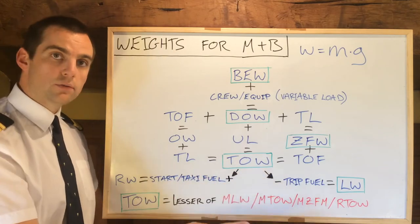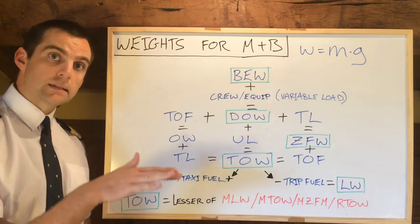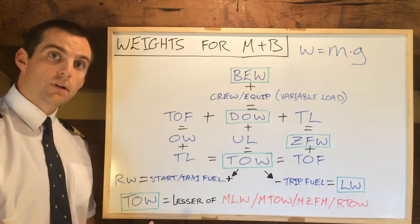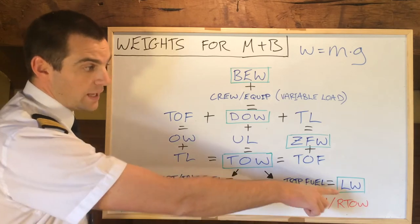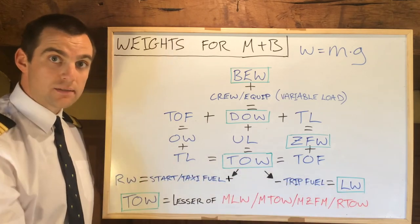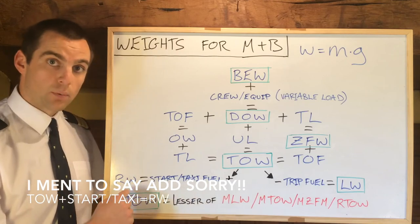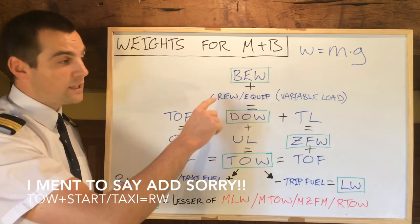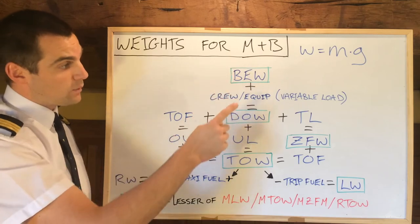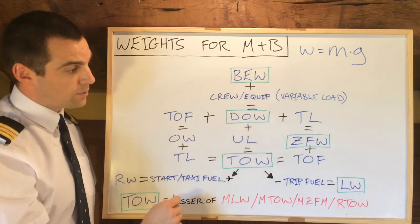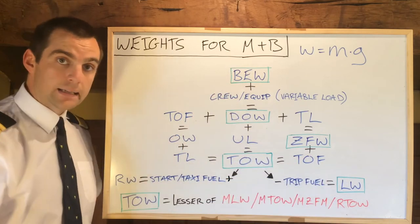From our takeoff weight — which is our weight lined up on the runway ready to take off — we can subtract our trip fuel and we will get to our landing weight. Or we can subtract our start and taxi fuel and get back to the ramp weight. The most important ones, marked with a green box, are the basic empty weight, dry operating weight, takeoff weight, zero fuel and landing weight.